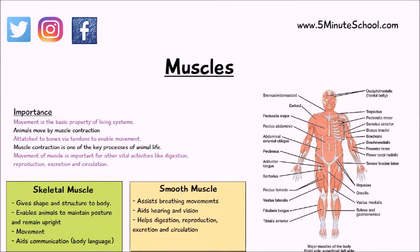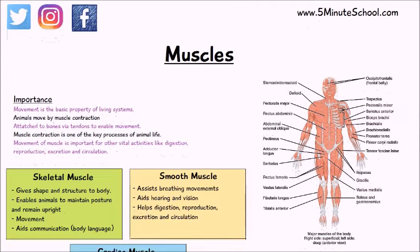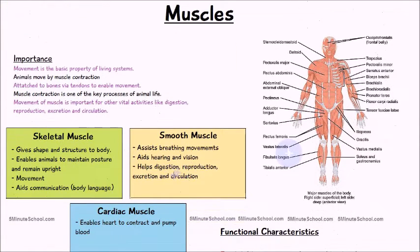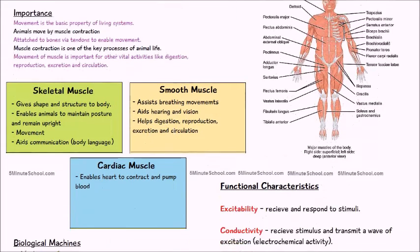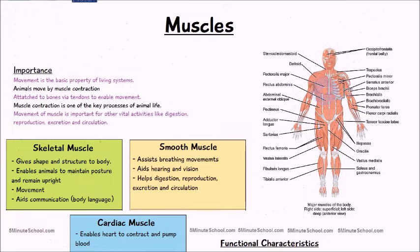Although when we talk about muscles we generally talk about movement of the body, there are also internal muscles which enable a lot of processes like digestion, reproduction, excretion, and circulation to occur as well. The diagram on the right shows the skeletal muscle attached onto the bone.